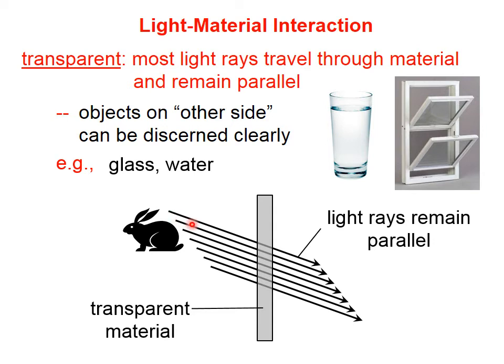Some of that light travels through the window and those light rays remain parallel as they go through the material. They're actually bent just a little bit as they go through the material, but that's a subject for another day. In any case, they remain parallel and as the observer over here on the right, we see a rabbit.